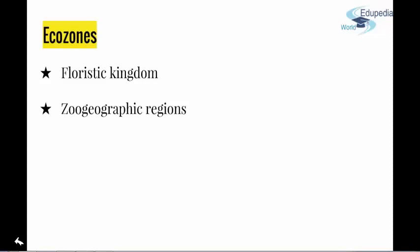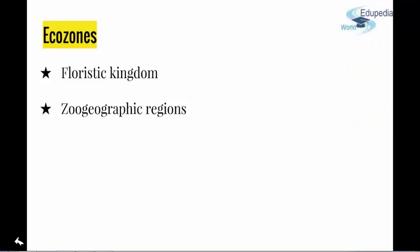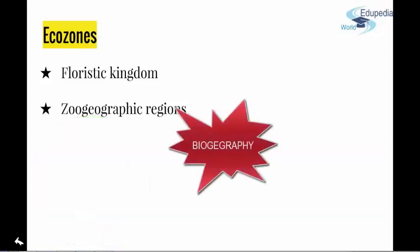For example, climate is similar in South Africa and South America, but their species assemblage is really different due to their isolation by the huge ocean, and evolution developed differently because of that barrier. The science which deals with these problems — like why different parts of the earth are characterized by different types of living beings, or how related plants and animal species ended up on different continents separated by large oceans — that science is called biogeography.